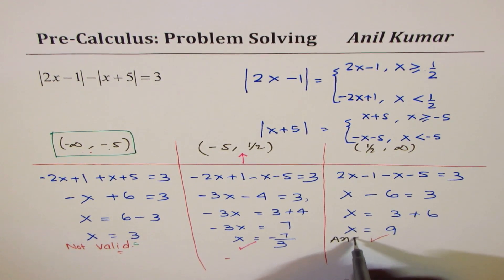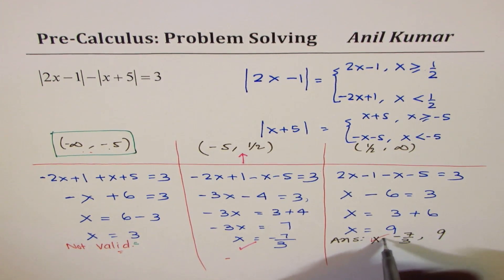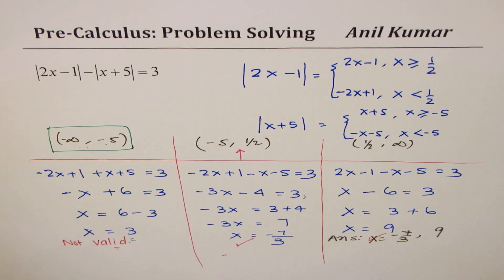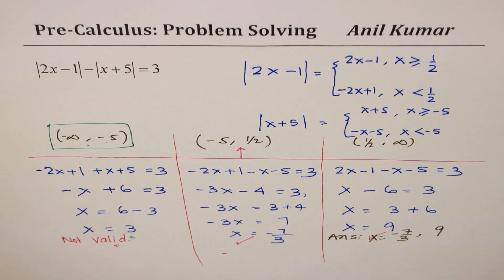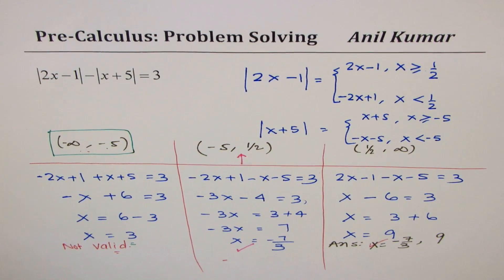We get two valid solutions: x = −7/3 and x = 9. That is how you solve equations and inequalities related to absolute functions. I purposely chose difficult questions — if you can do these, you can handle the simpler ones too. You can search for 'Anil Kumar absolute functions playlist' for more practice. Feel free to write your comments, share your views, and if you like and subscribe, that would be even better. Thank you and all the best.